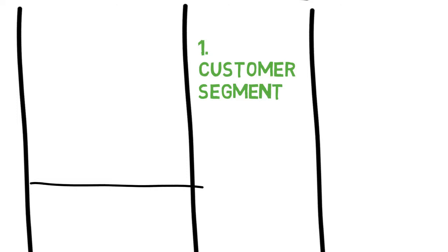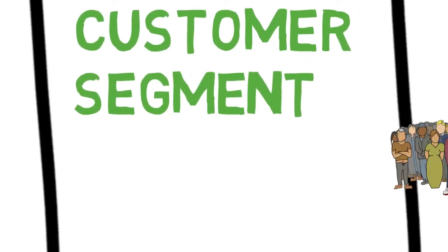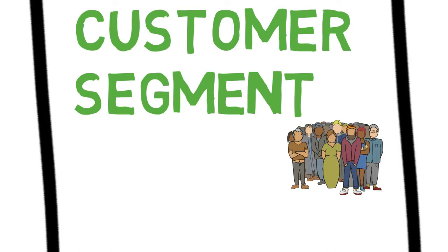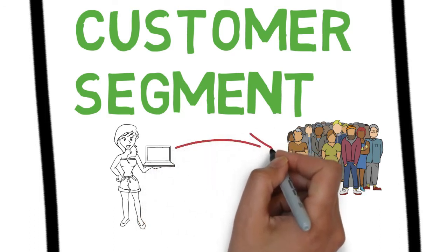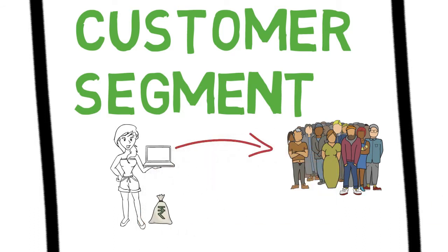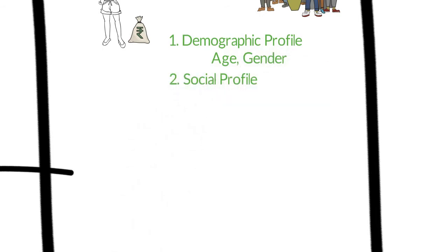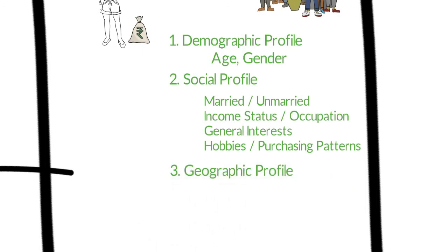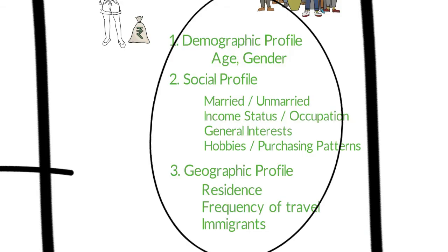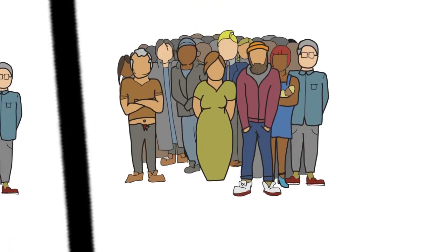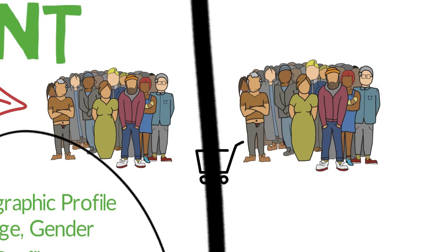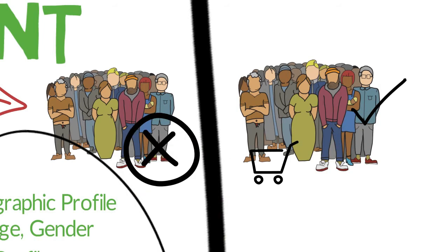First and foremost, we'll talk about the customer segment or the target population. The target population or customer segments are those people who might be interested in buying your product or services. You should have a clear-cut idea on how to sketch your target population based on demographics, social, and geographic characteristics. You should know who they are and why they should be interested in your product or services, because every organization must make a conscious decision about which segments to serve and which segments to ignore.